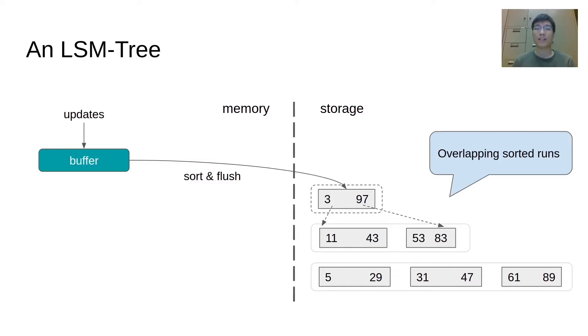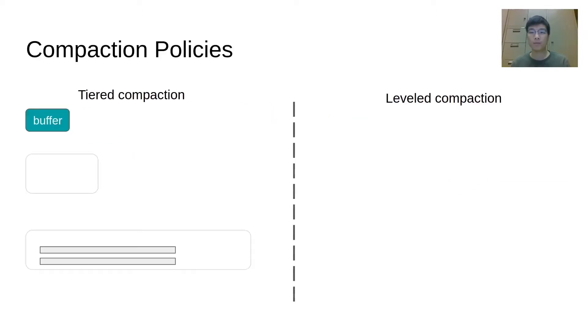Depending on how the data is selected for compaction, we have different compaction policies. In general, there are two types of compaction policy, tiered compaction and leveled compaction. In tiered compaction, each level accumulates runs from the previous level. When the number of runs reaches a threshold, these runs will be sort-merged and flushed to the next level.